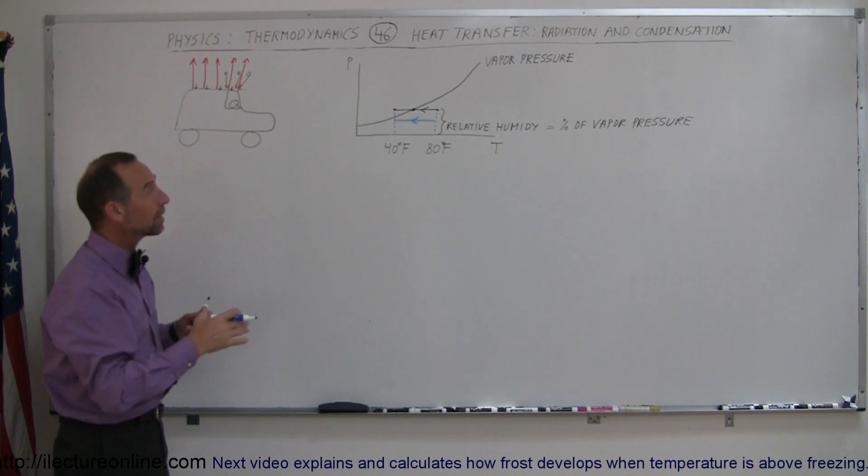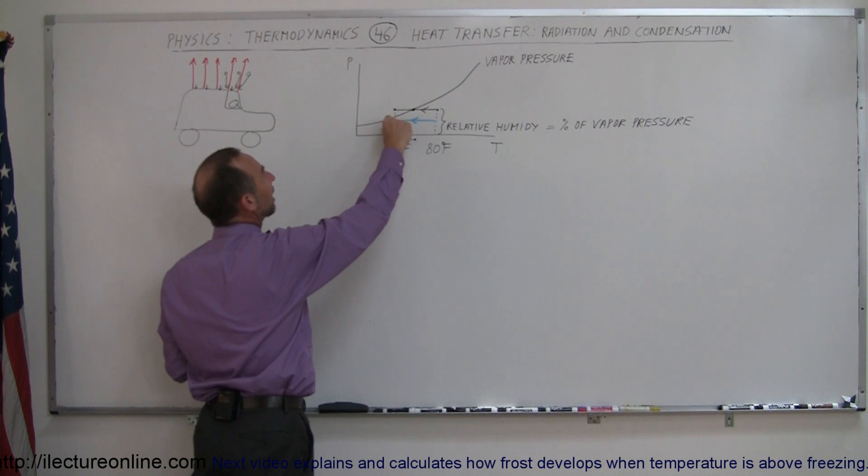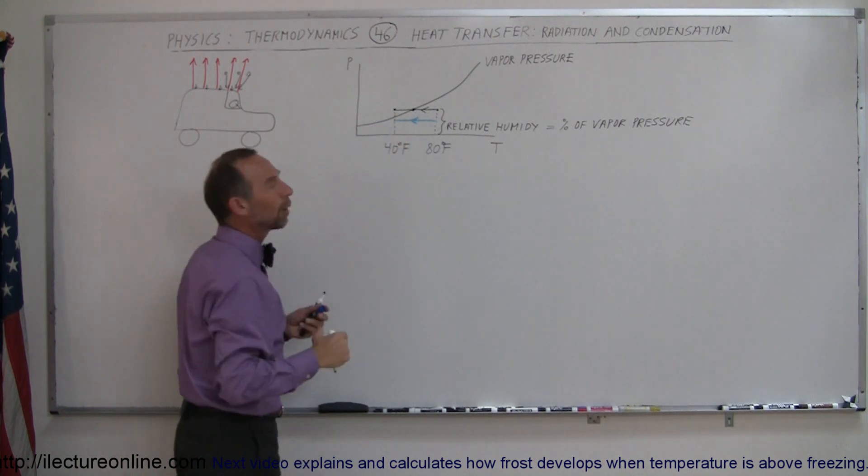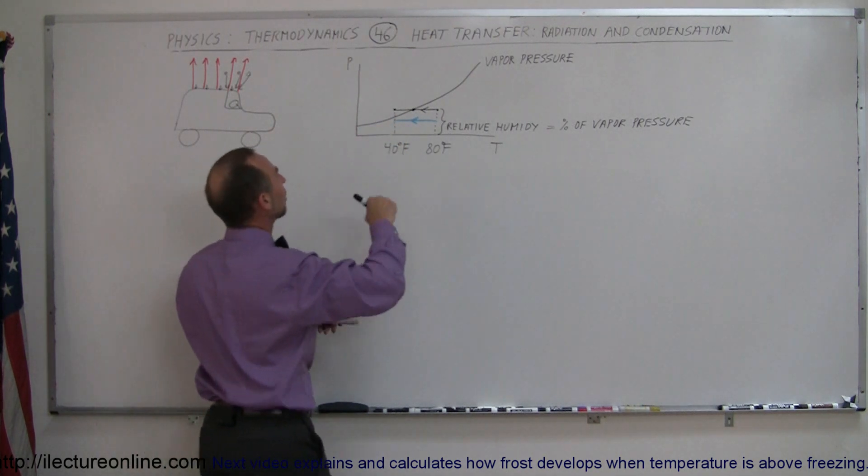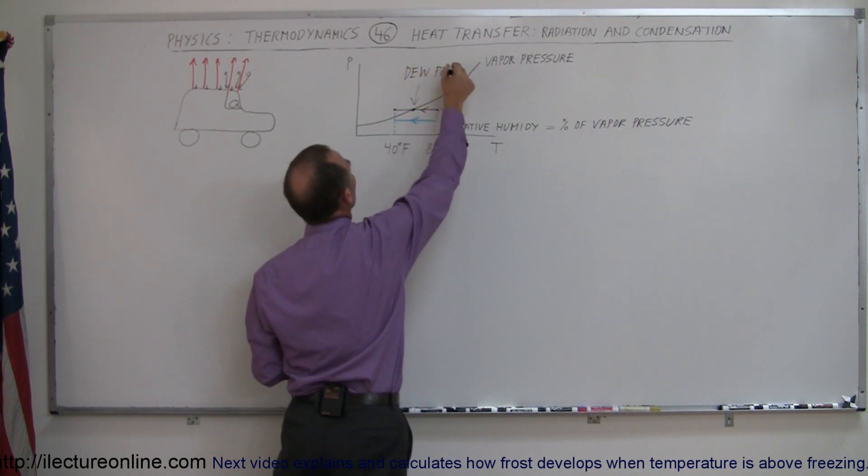condensation will not appear on surfaces because the temperature is such that the relative humidity stays below 100 percent and we never get to what we call the dew point. So this is called the condensation point or the dew point. So we may never reach the dew point.